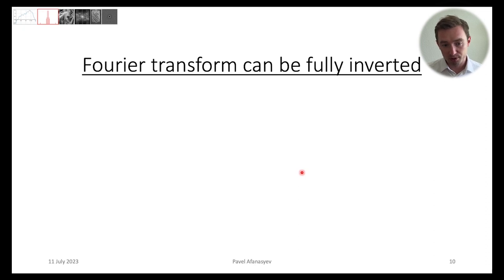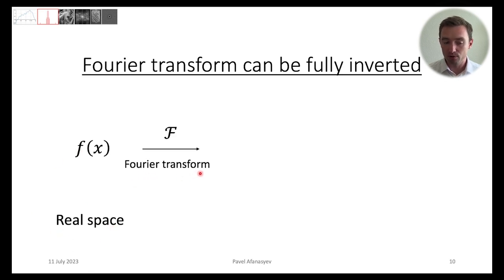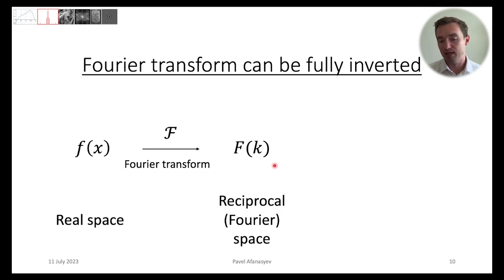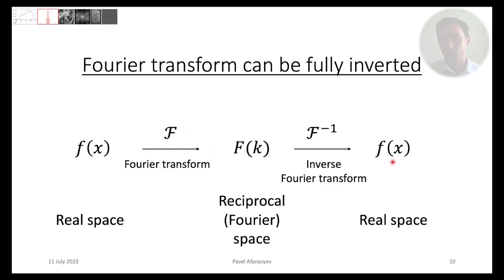The most important property is that the Fourier Transform can be fully inverted. If we have our function in real space and we perform the Fourier Transform — decomposing it as a sum of other functions — we'll be working in so-called reciprocal or Fourier space. We perform one Fourier Transform, get another function, and then if we perform an inverse Fourier Transform, we get our original function back in real space.